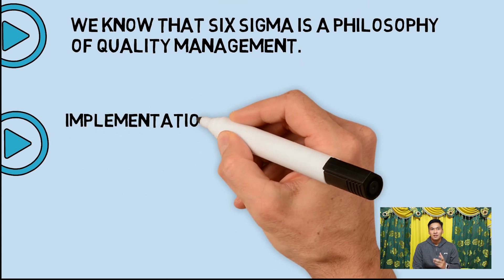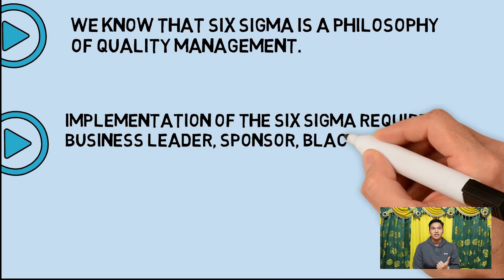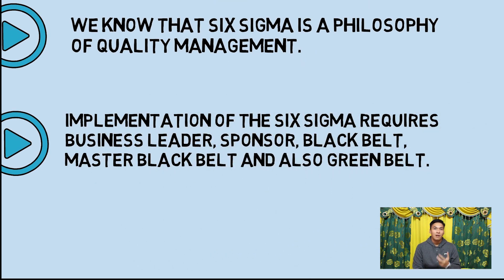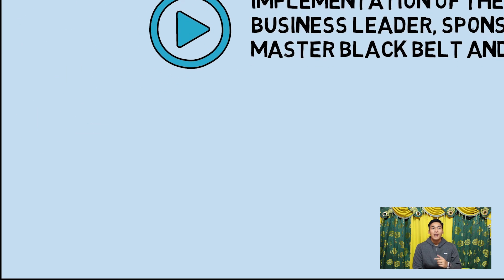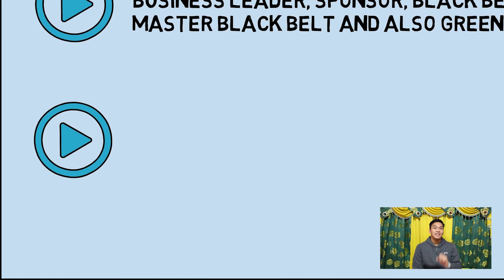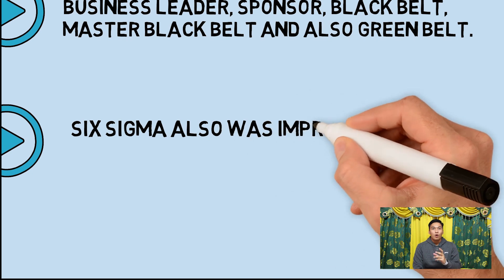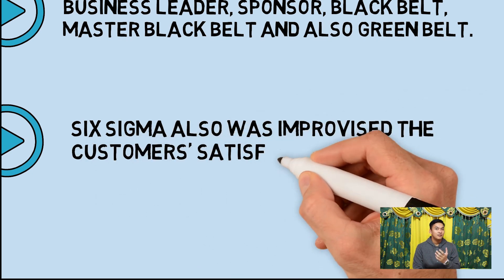Implementation of Six Sigma requires business leaders, sponsors, Black Belt, Master Black Belt, and Green Belt. And lastly, Six Sigma improves customer satisfaction.